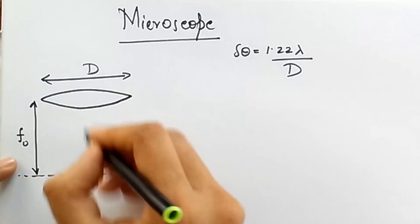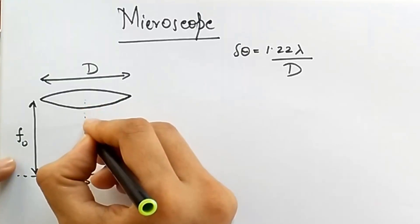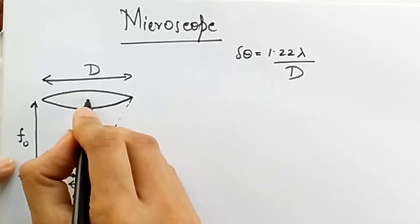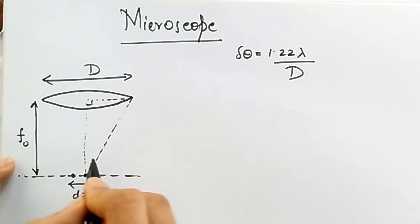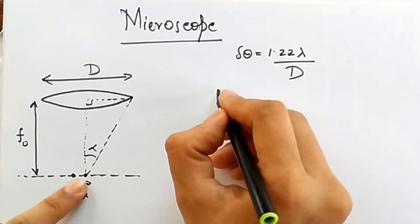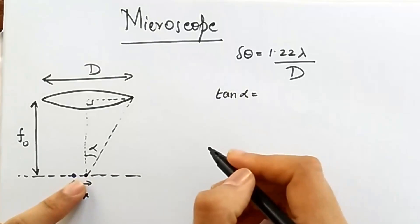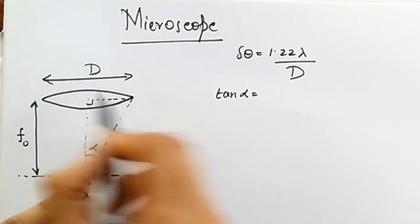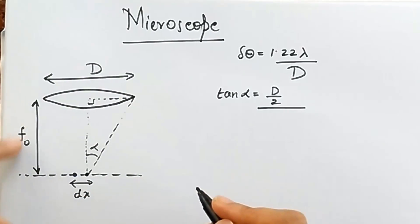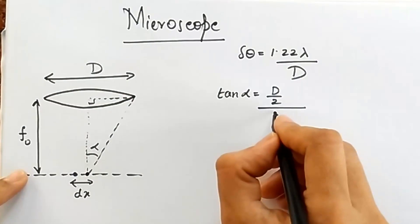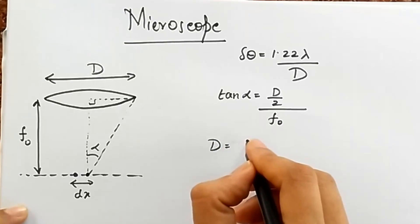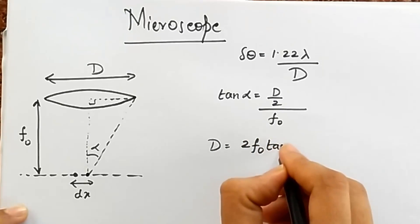So now I can do some geometry. This is one right angle triangle. If you look at this right angle triangle, if I call this angle as alpha, then from trigonometry it follows that tan alpha is going to be the opposite side, which is half the diameter, divided by the adjacent side, which is f0. So the diameter becomes 2 times f0 into tan alpha.